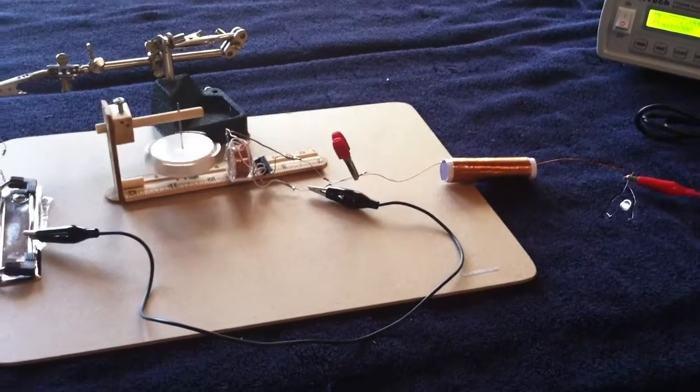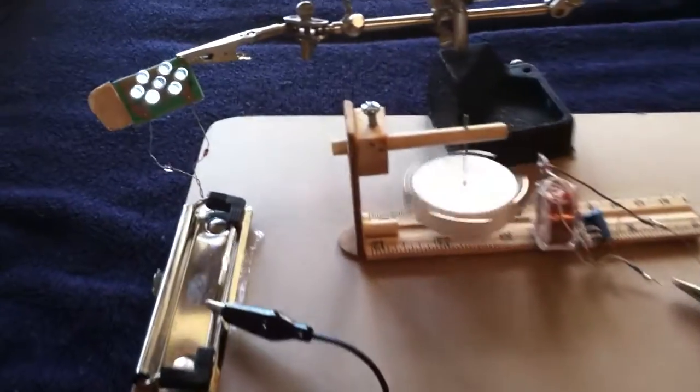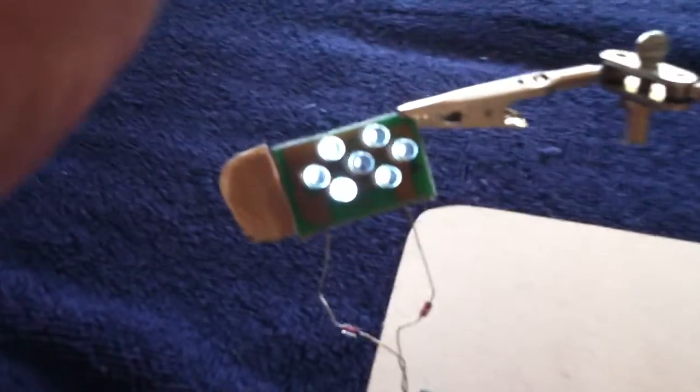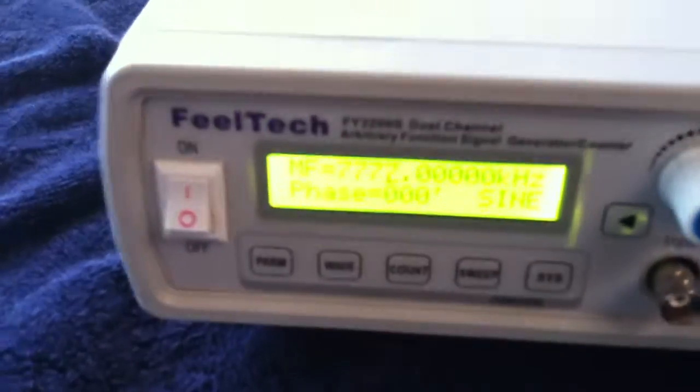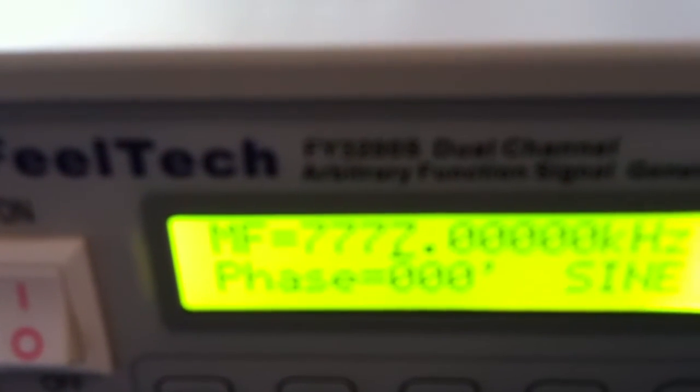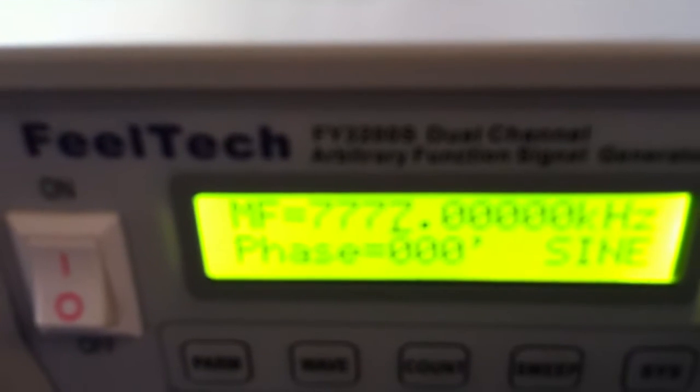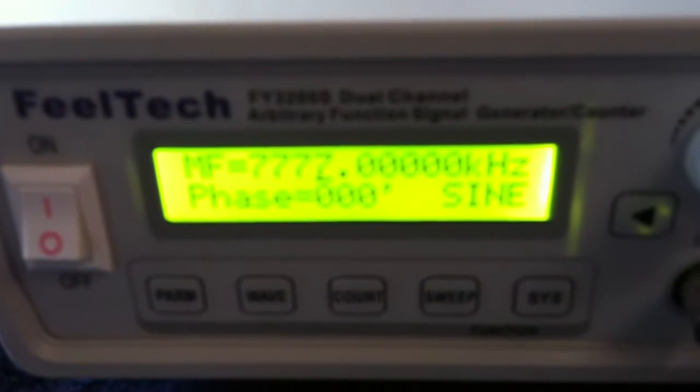I'm calling this the Lucky 7's Pulse Motor. That's a pulse motor, those are LEDs, and that's a coil. That's a function generator set at 7777 - 7.777 megahertz on a sine wave.